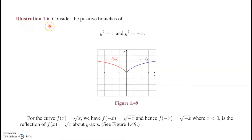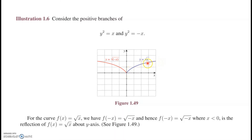In Illustration 1.6, consider y² = x and y² = −x. When y² = x, eliminating negative values gives y = √x — that is the curve. When y² = −x, we take all the negative values of x, so graphing that gives a reflection of y = √x, or equivalently of y² = x.